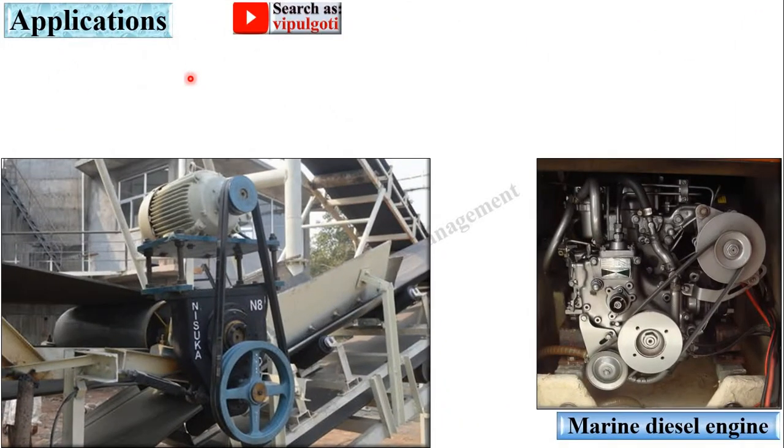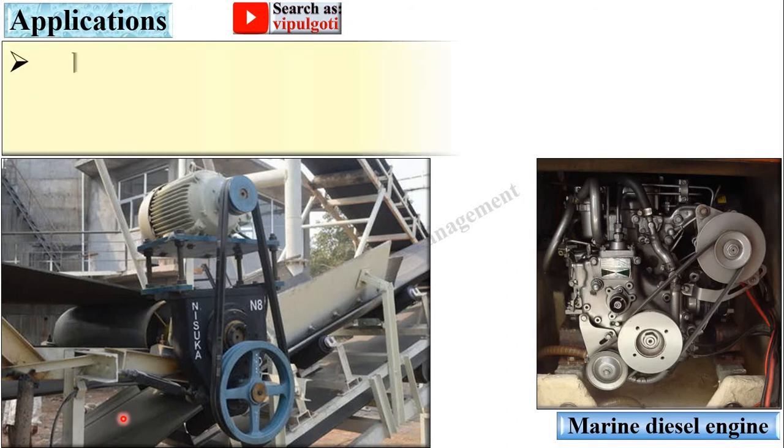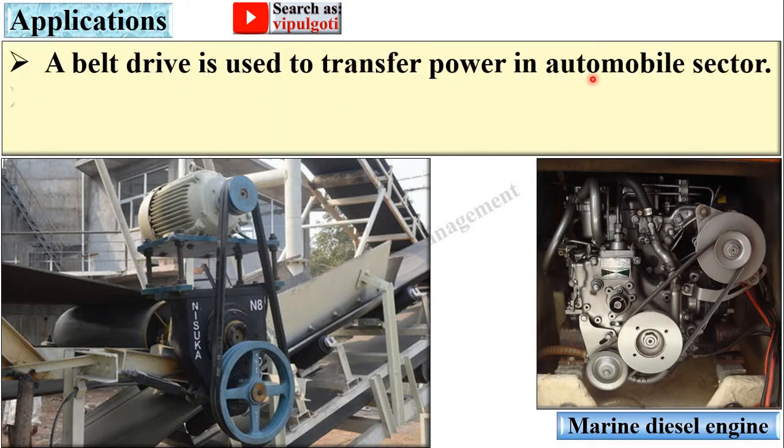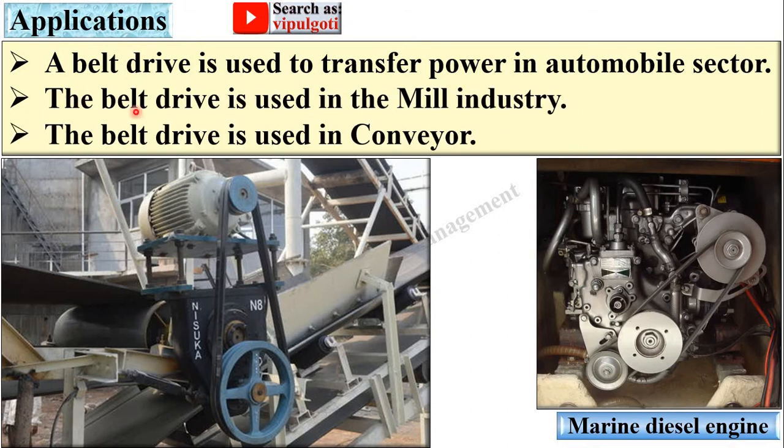Now applications of the belt drive. Here you can see the belt drive is used in marine diesel engines, and here you can see the conveyor where belt drive is used. A belt drive is used to transfer power in the automobile sector, the mill industry, and in conveyors.